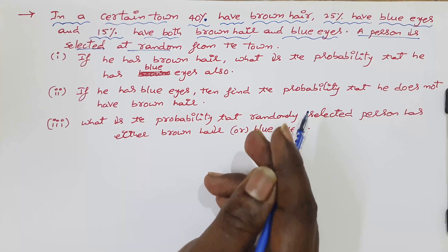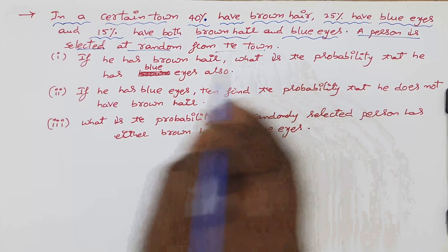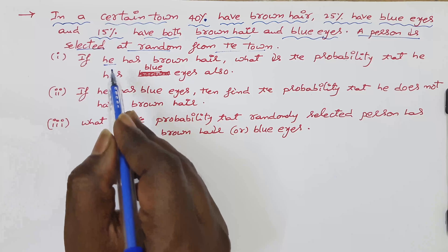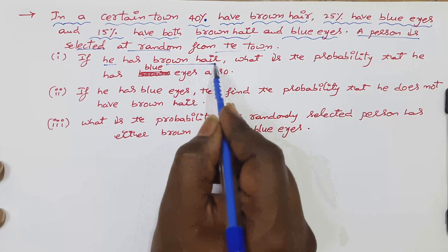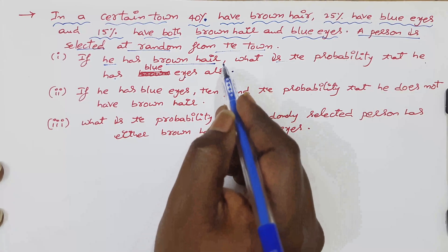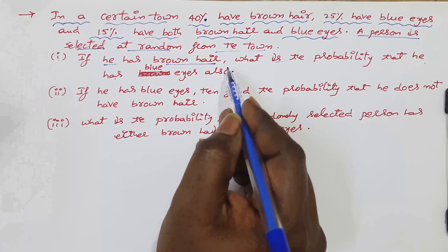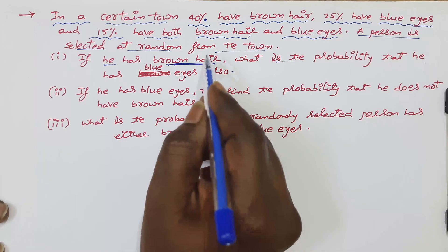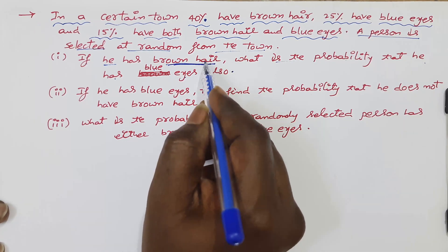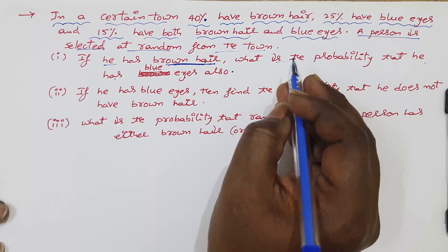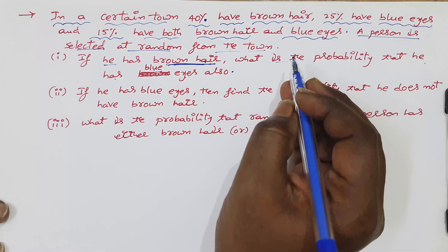A person is selected at random from that town. The first question is: if the randomly selected person has brown hair, what is the probability that he also has blue eyes? The given condition is that the person has brown hair.